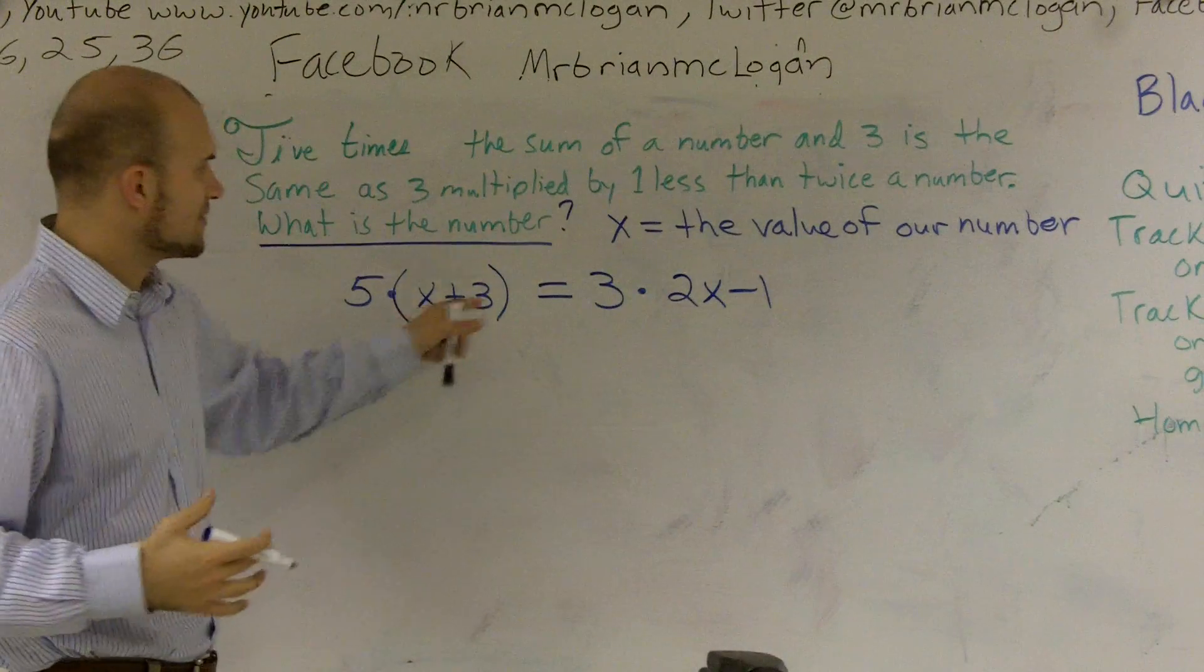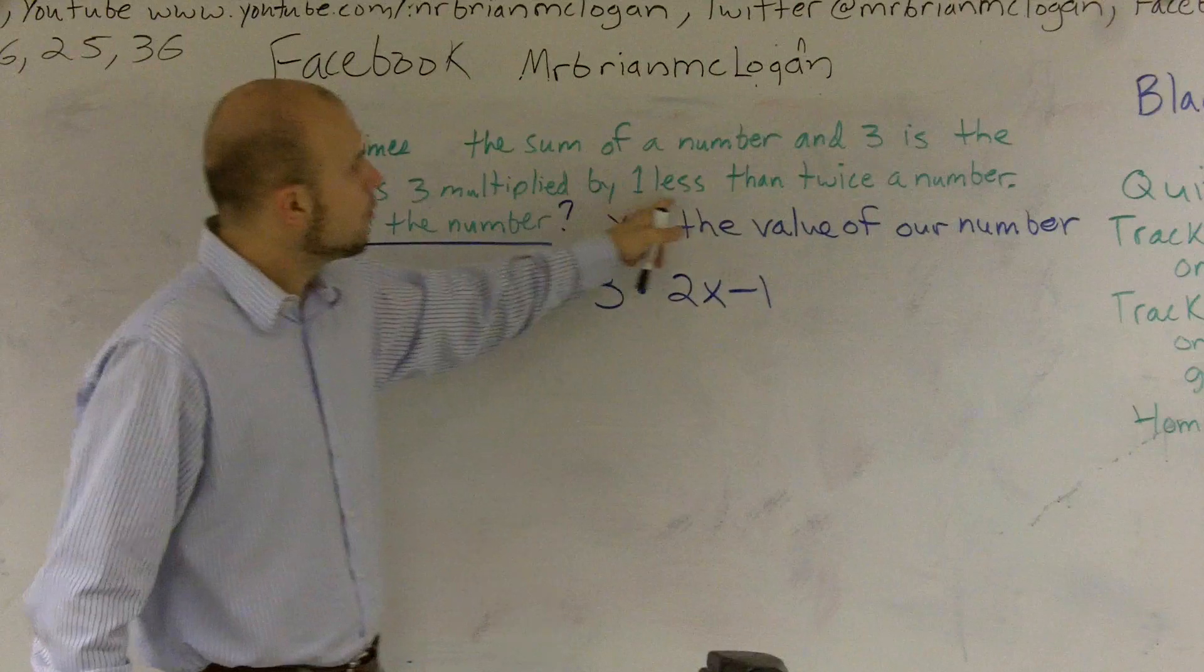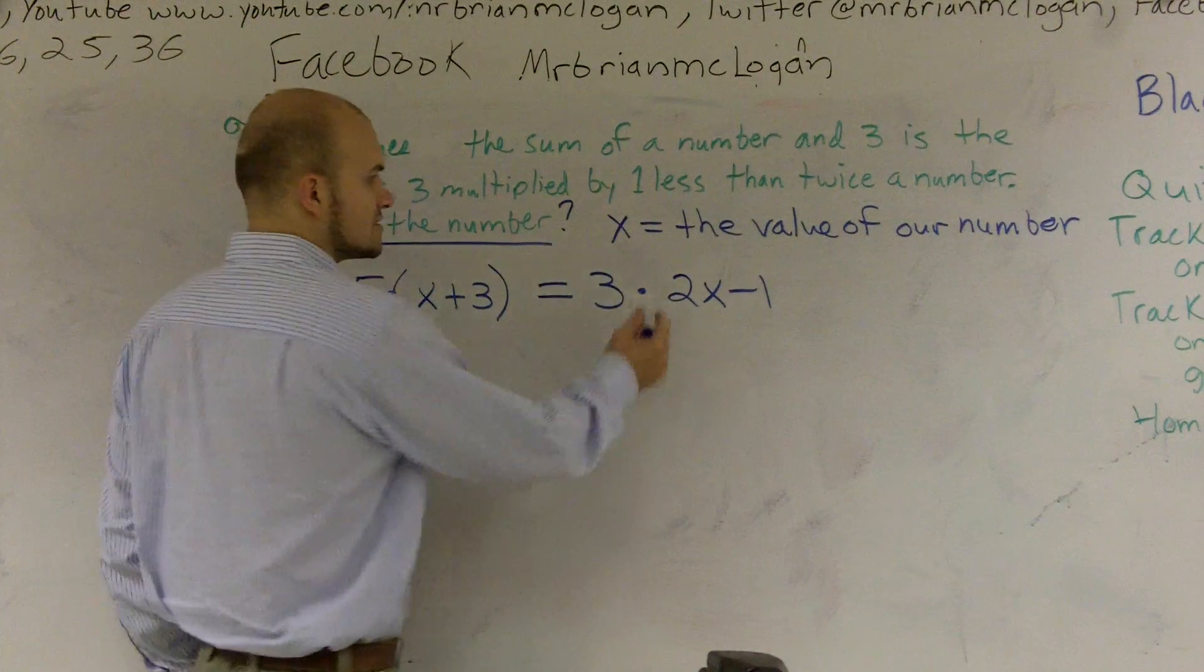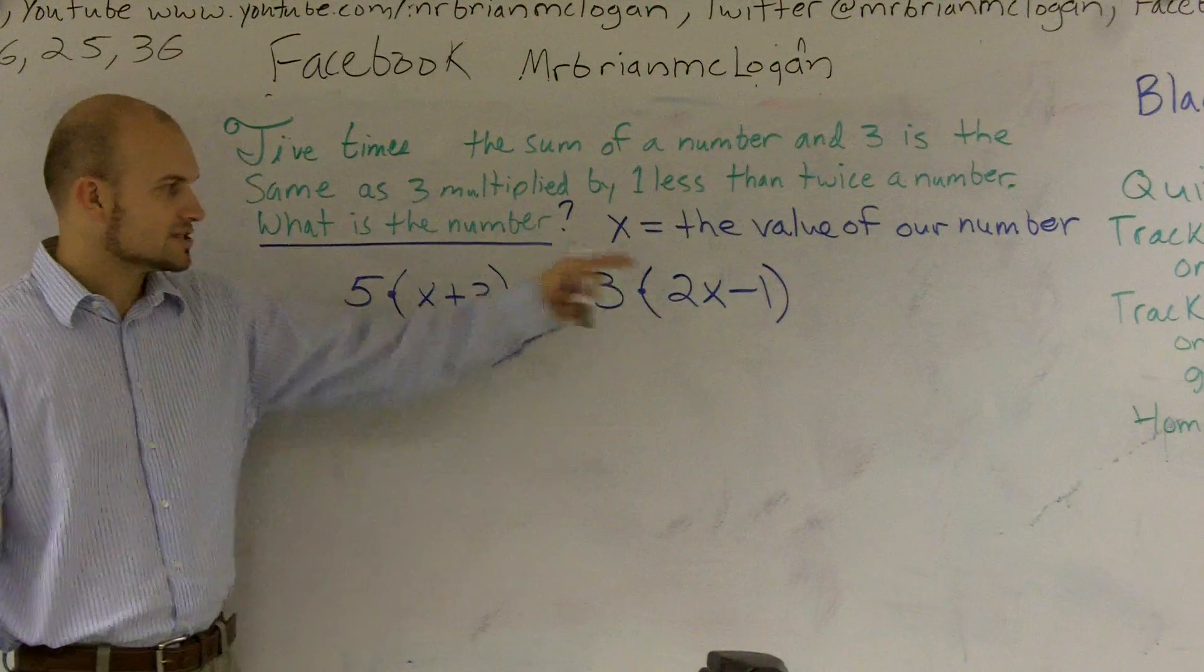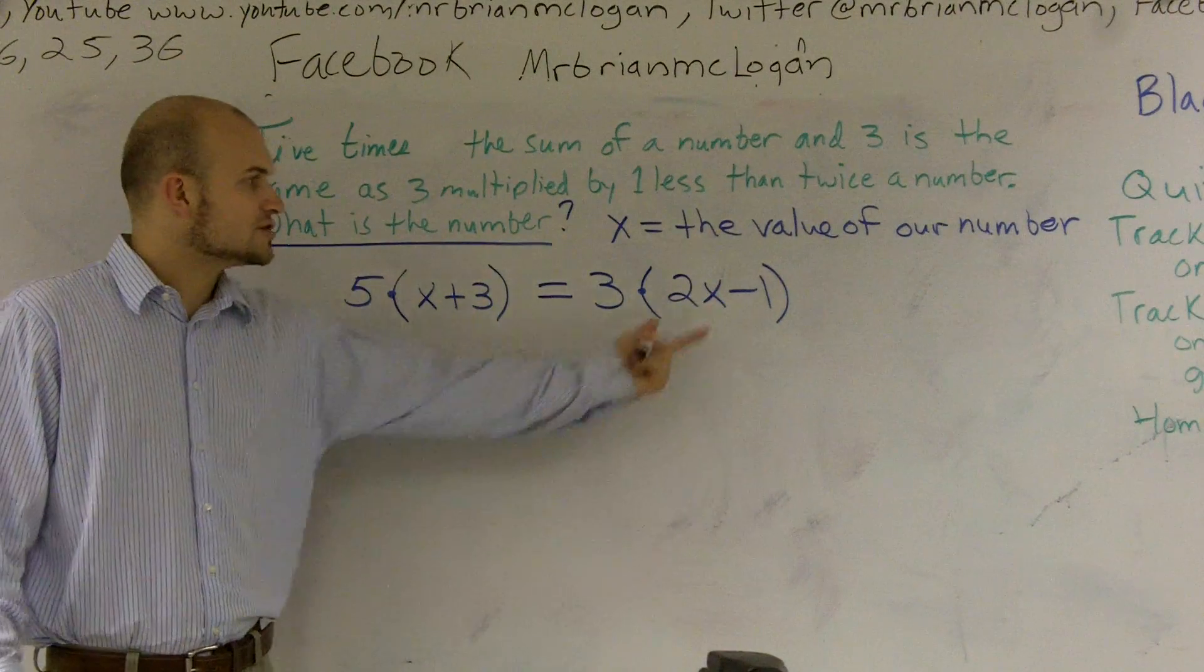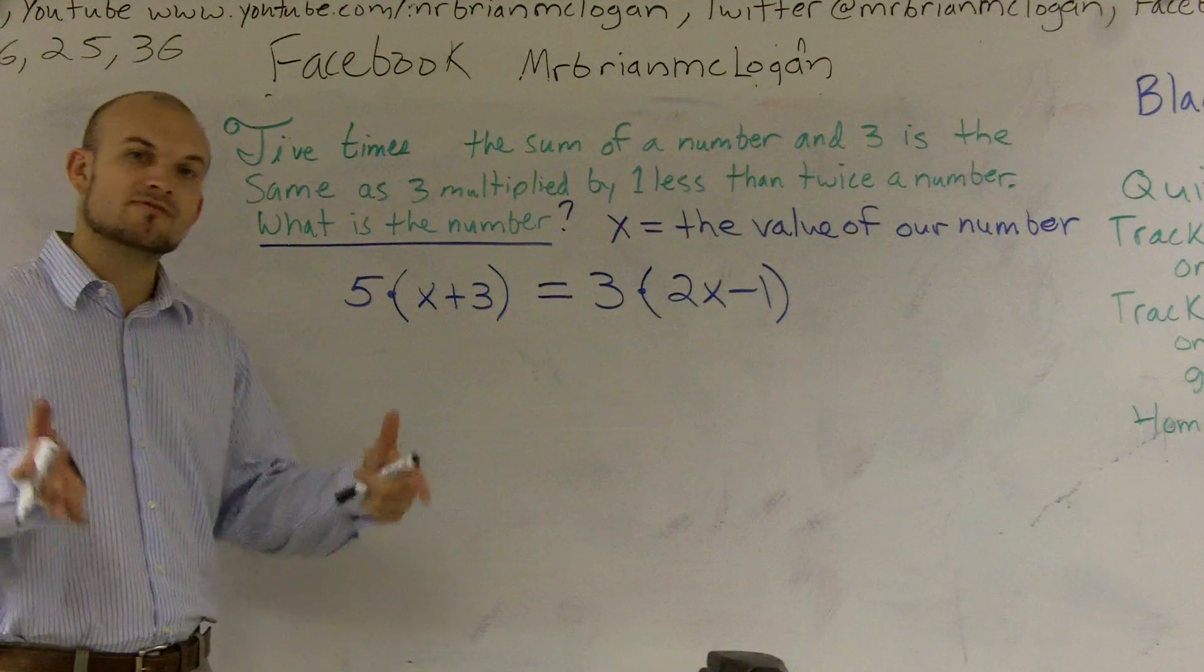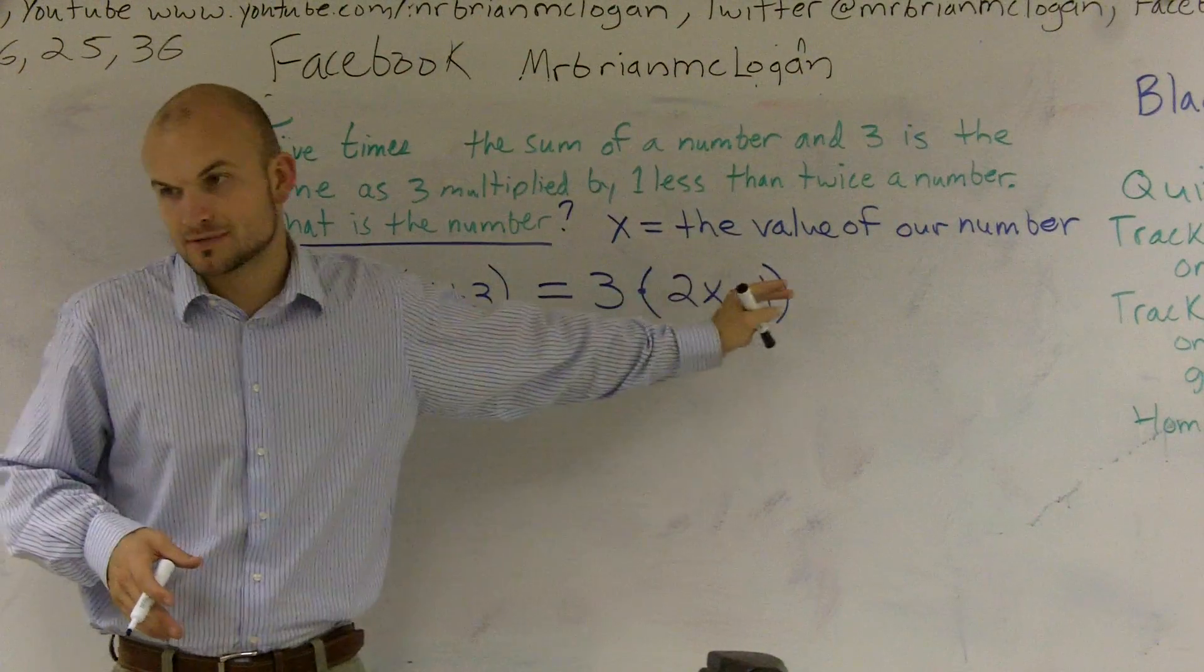Again, our same principle is going to apply. It says three is multiplied by one less than twice a number. It's not multiplied by twice our number. So to prevent order of operations from making us multiply by 2x first, we need to put them in parentheses so I can find what is one less than twice a number first. And then I can multiply by three. So here, now I have my equation.